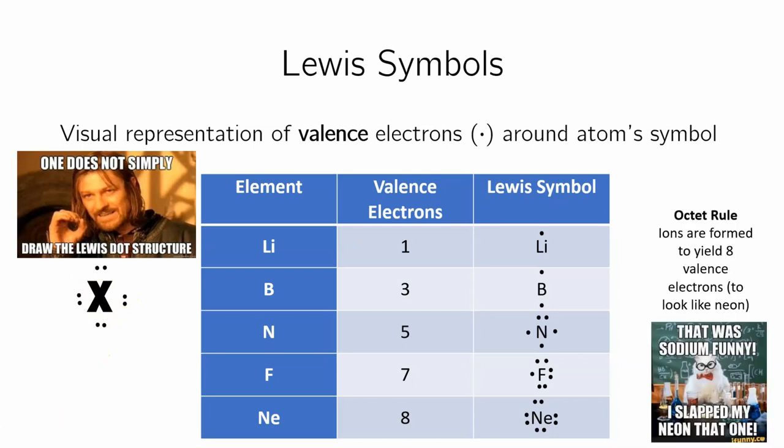There's this thing called the octet rule. The octet rule says that they're all striving to look like neon with eight electrons. They all want to look like that. Fluorine wants another electron, and once it gets it, it's going to be happy. It's going to look like neon. Lithium could either gain seven, which is hard to do, or give up this electron, and it will still look stable. That's basically the rule we're going to be seeing when things start bonding.